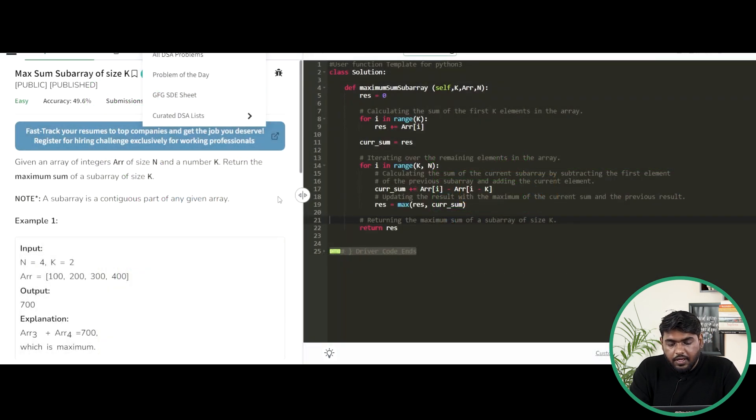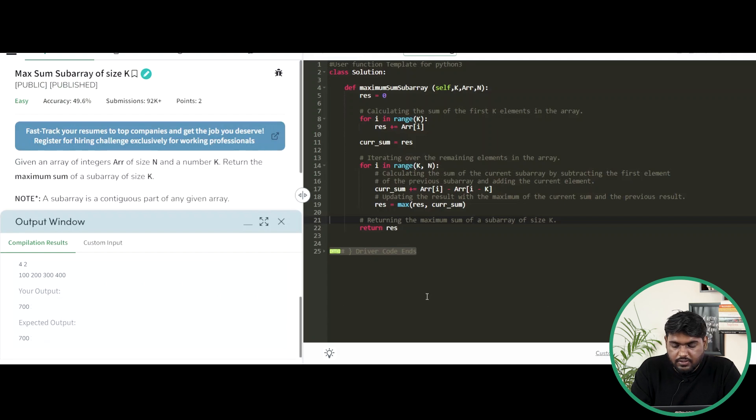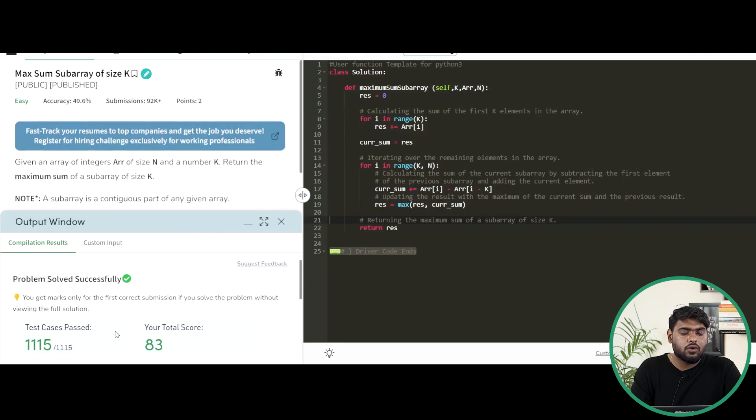So here is the code. Let's compile it. All right, it is getting compiled. It is giving us the right answer. Trying to submit that. So it has passed all the test cases. The problem was quite simple and I hope that you have understood it well. Do comment down below if you like the approach and share the video with your friends. Thanks. Keep coding.